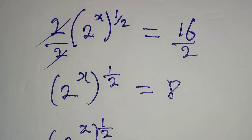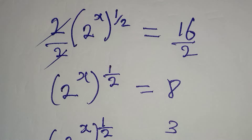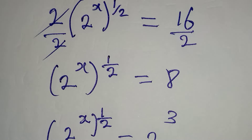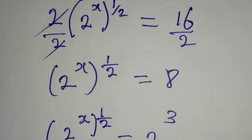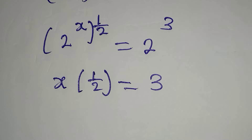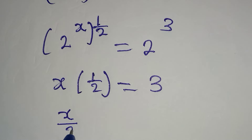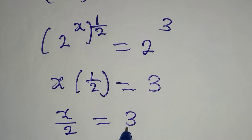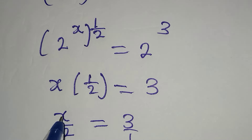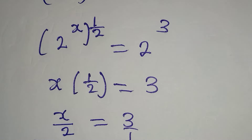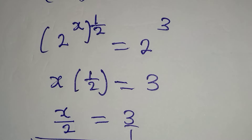What if we divide this by 2 and divide 16 by 2? The 2 will cancel, right? Then 2 to the power of x to the power of 1 over 2 will be equal to 16 divided by 2, and that is 8. Now, what can I do from here? I can work on the right hand side. We have 2 to the power of x to the power of 1 over 2 to be equal to 2 to the power of 3.